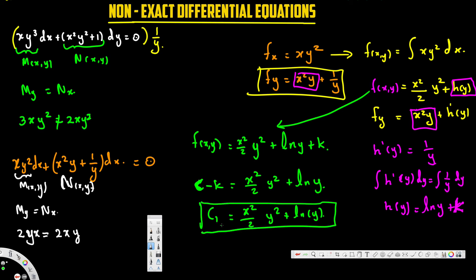That's how we solve a non-exact differential equation. First, show it's non-exact by comparing ∂M/∂y and ∂N/∂x. Then find the integrating factor using μ = e^(∫(Nx − My)/M), integrating with respect to whichever variable remains. Multiply everything by the integrating factor, then solve as an exact differential equation. I hope you found this helpful — subscribe, check the differential equations playlist, and leave questions in the comments.